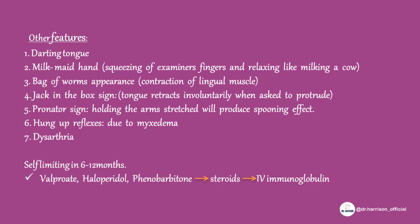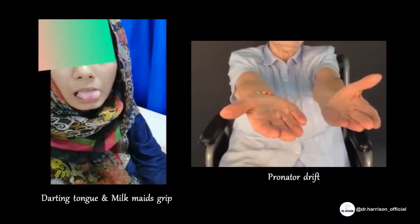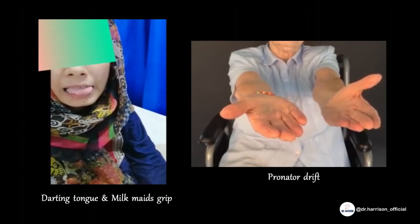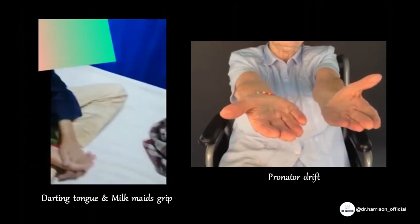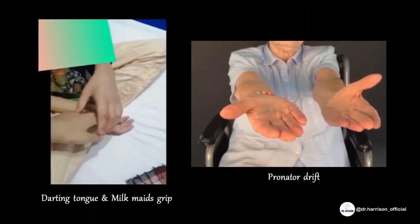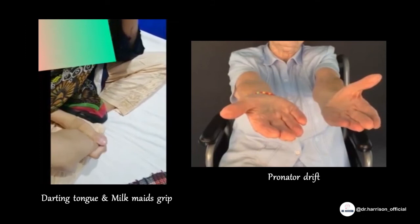Hung-up reflexes due to myxedema and dysarthria are also seen. Treatment of Sydenham's chorea: it is self-limiting in 6 to 12 months. In chronic cases, valproate, haloperidol, or phenobarbital is used. If that fails, steroids are used, and finally IV immunoglobulin is the last resort.